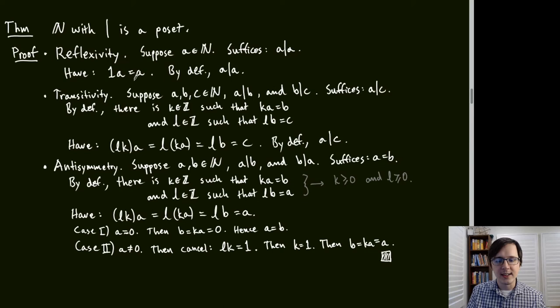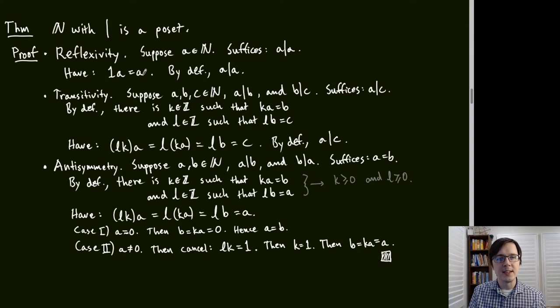Reflexivity: given a natural number A, we want to show A divides A. This is straightforward: 1 × A = A, so by definition of divides, A divides A.